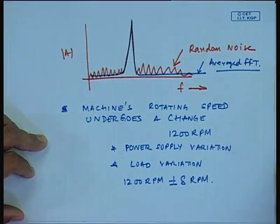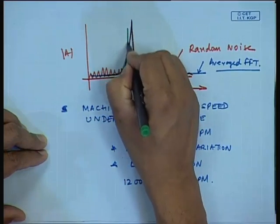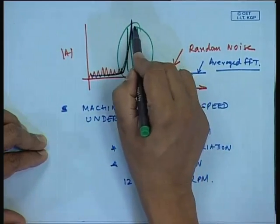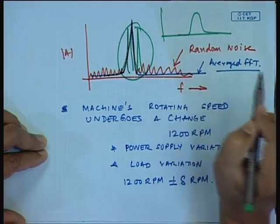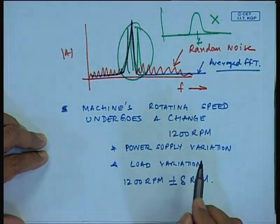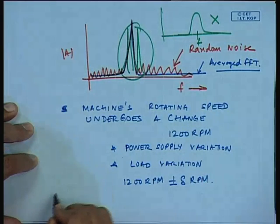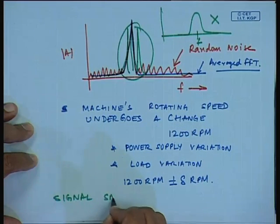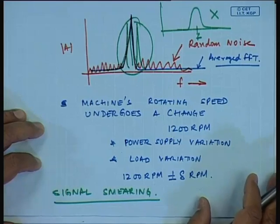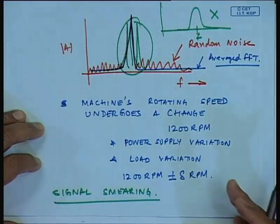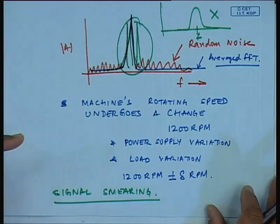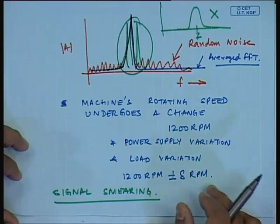What happens then? One average, the frequency could be here, another time it will be here, another time it could be here. Once you have an average of this, you may have a signal something like a smeared broad peak. This is not desired — I cannot identify the frequency of my machinery because of what is known as signal smearing. Signal smearing has occurred because the signal's frequency has changed while you are doing the FFT or the averaging. But if it is a nice constant steady-state constant-speed machinery, such averaging will not have the problem of signal smearing.